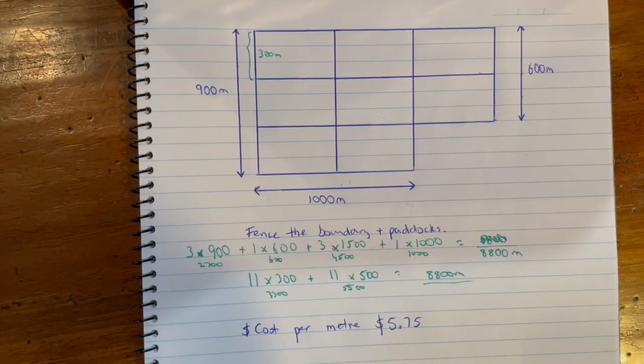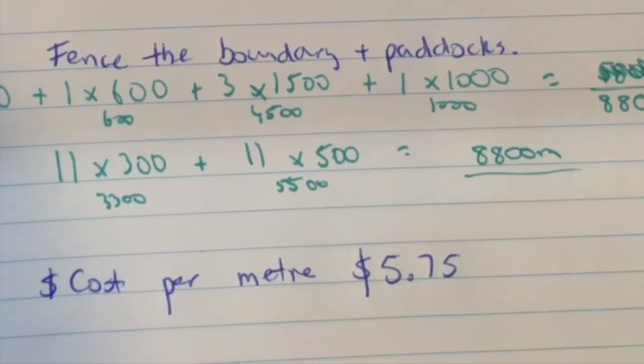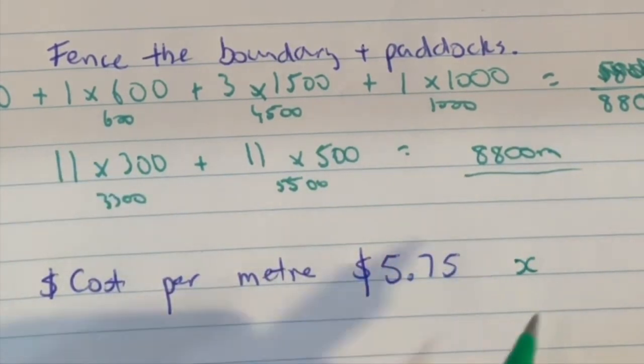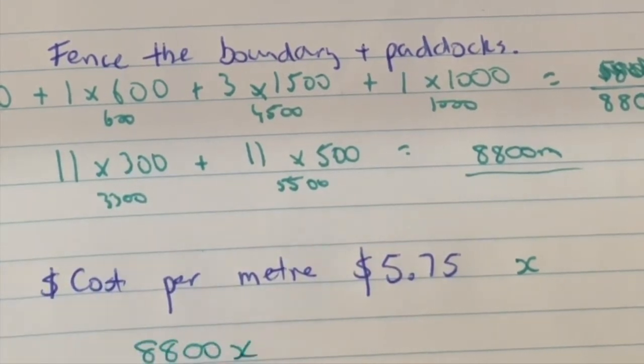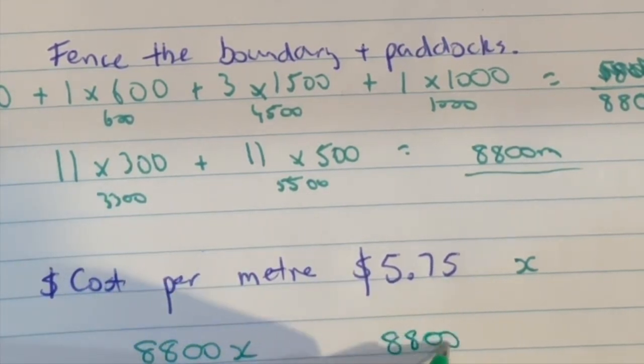Now the cost per meter is really just a multiplication question. So the cost per meter in the question is $5.75, but in effect it's what we would know in algebra as x, the cost. So it'll be this total meterage, 8,800, times x. In this case it would be 8,800 times 5.75, and that will give you the total cost.